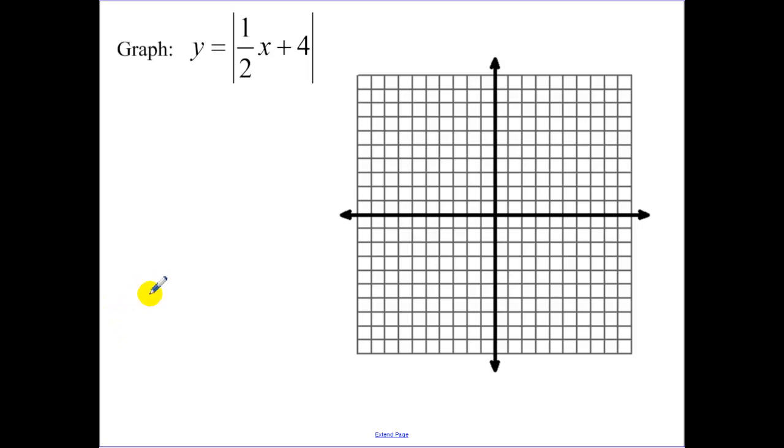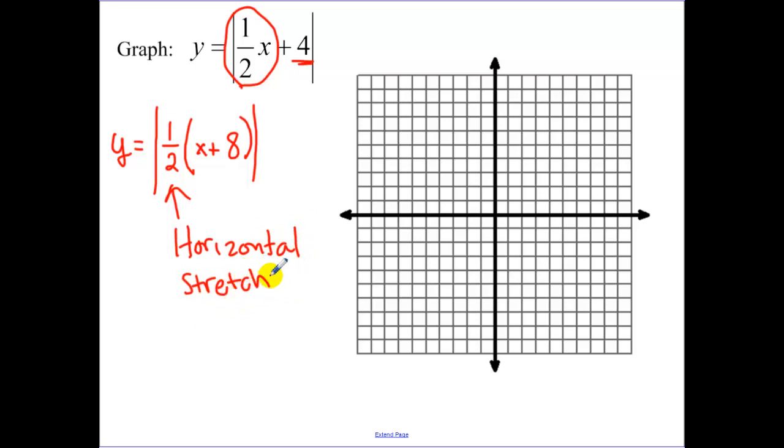Now this one's a little bit more complicated. Whenever you have something that's being multiplied to the x, what you need to remember to do is, when it's inside the absolute value function, or inside any function, your transformations are a little bit backwards to what seems obvious to people. If you have to factor out the 1 half, when I factor out that 1 half, what times 1 half is 4? That's going to be 8. Now, technically, this is a horizontal stretch, because it's inside the function and it's opposite of what it seems. But because of how absolute value functions work, that's really the same thing as these slopes, like we've been doing.